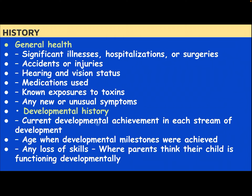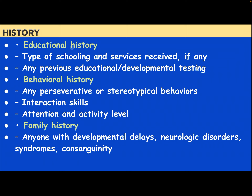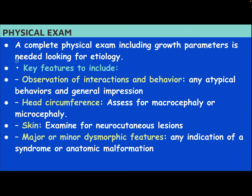Developmental history: current developmental achievement in each stream of development, age when developmental milestones were achieved, any loss of skills, and where parents think their child is functionally developmental. Educational history: type of schooling and services received, if any, and any previous educational or developmental testing. Behavioral history: any repetitive or stereotyped behavior, interaction skills, attention and activity level. Family history: anyone with developmental delay, neurological disorder, syndrome, or consanguinity.